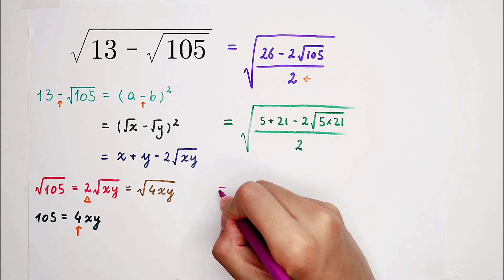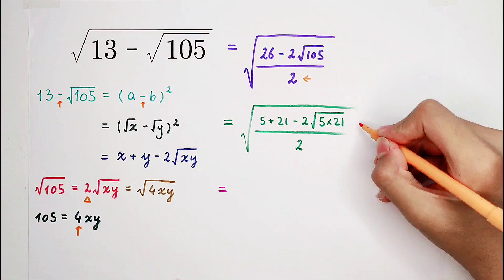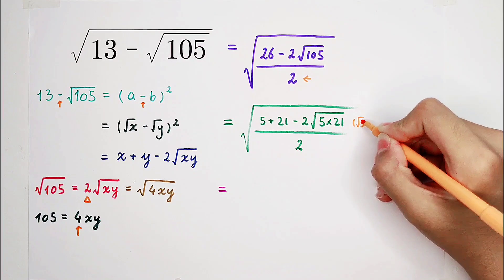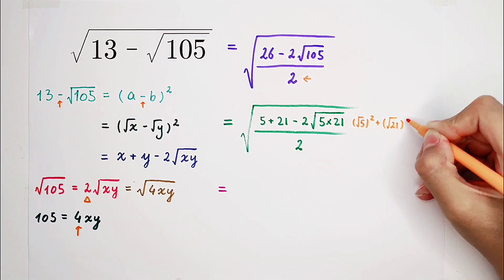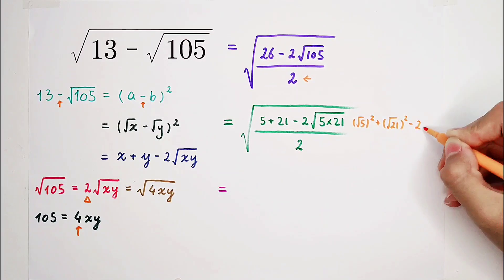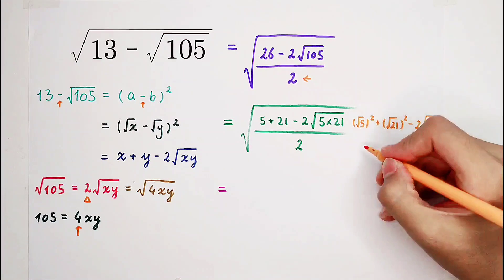So then the numerator is actually square root of 5 squared plus square root of 21 squared, and then minus 2 times 5 times 21. And this numerator is, of course...